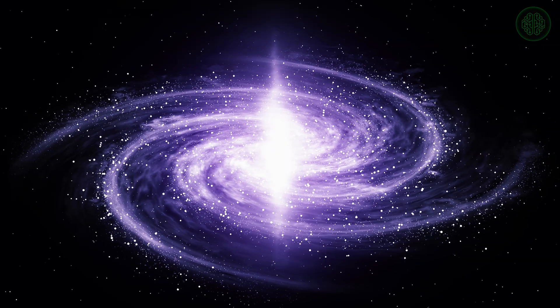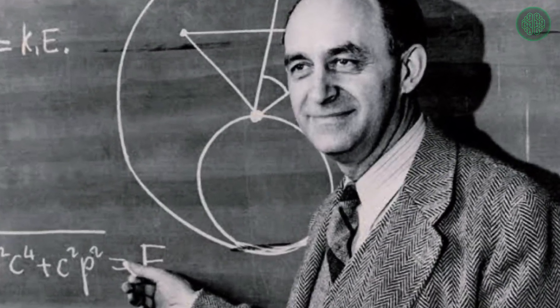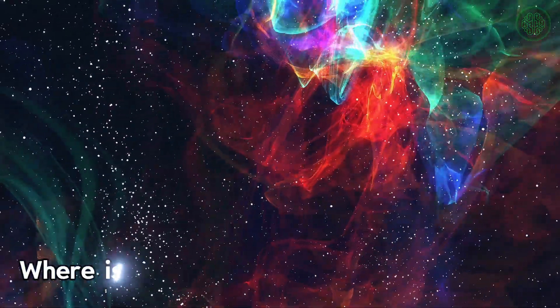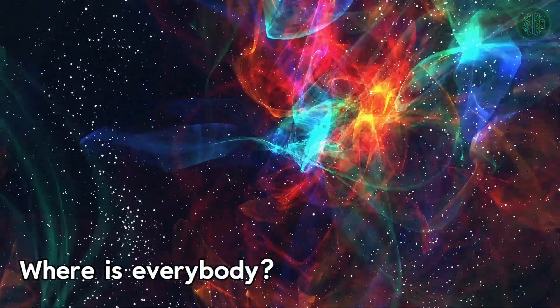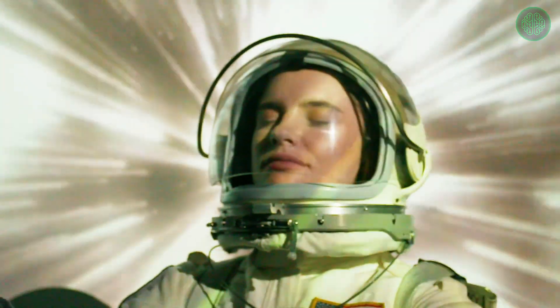This is the heart of the Fermi Paradox. The paradox is named after physicist Enrico Fermi. He famously asked, where is everybody? Fermi wasn't the first to ask this question, but his simple phrasing made it a cornerstone of discussions about extraterrestrial life.